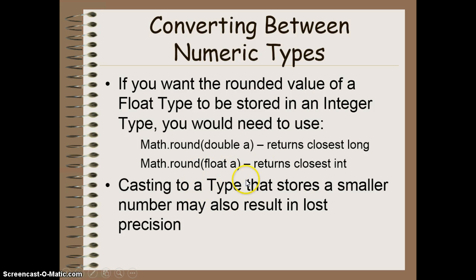The other thing you have to be aware of is if you try to cast to a type that stores a smaller number, you may also lose precision there as well. So if I want to cast from an int to a short, obviously if I have a larger int, it's going to max it out at the largest short I could possibly have.